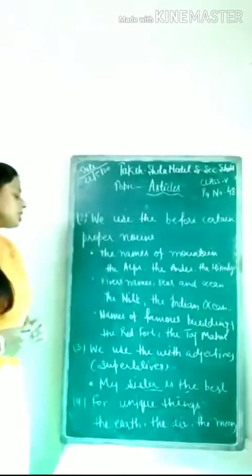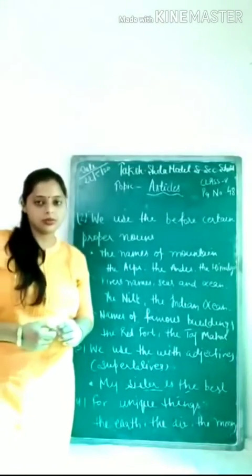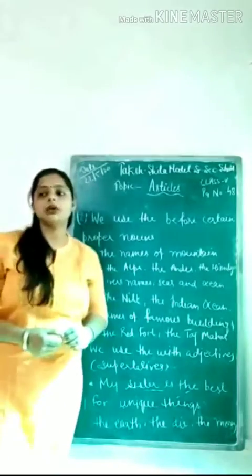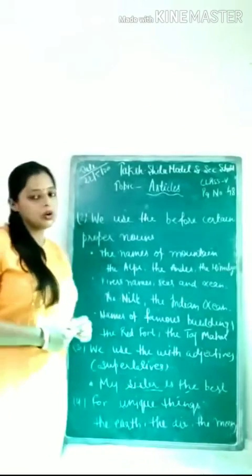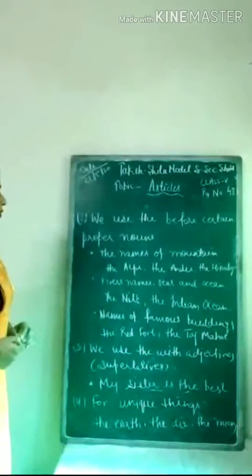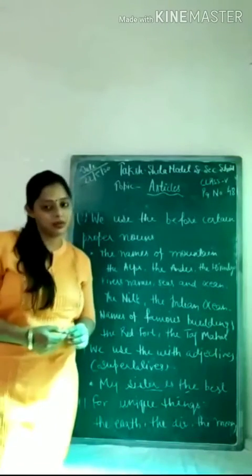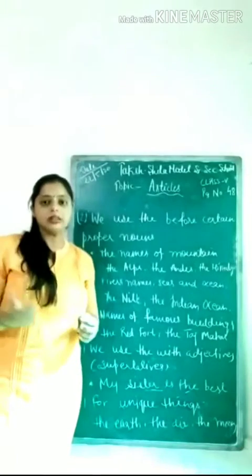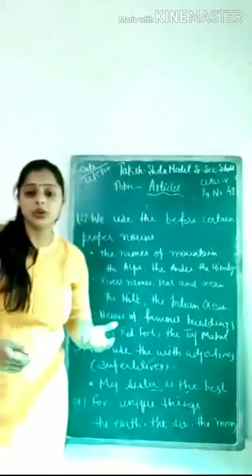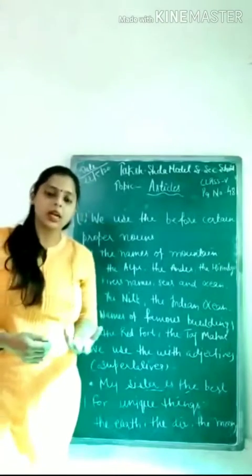For the names of rivers, seas, and oceans, we use The — for example, the Nile (a river), the Indian Ocean. That is why we use The. For the names of famous buildings, we also use The because they are proper nouns — for example, the Red Fort, the Taj Mahal.